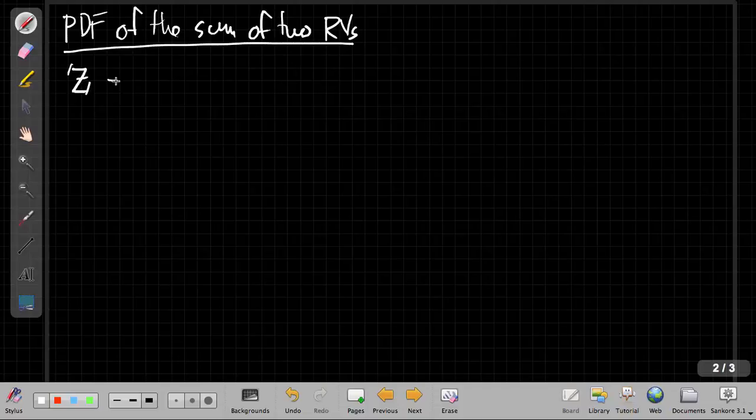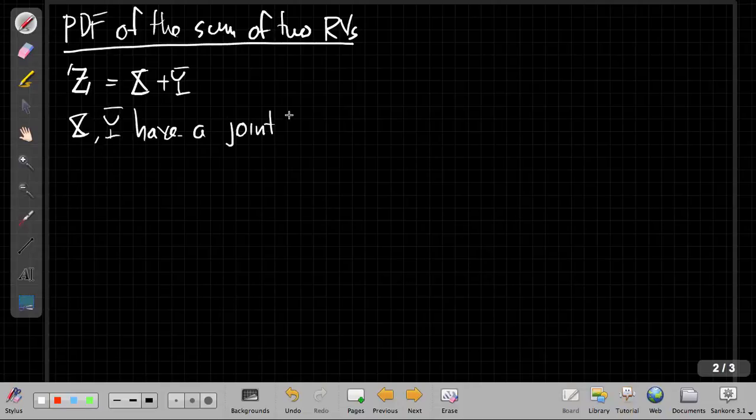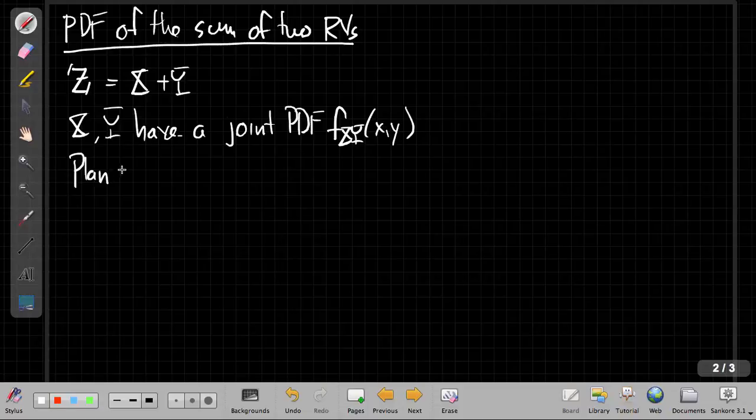We're going to assume Z is equal to X plus Y, where X and Y have a joint PDF f_XY(x,y). Our plan: find the CDF first. This is a good strategy in a lot of probability problems where you need to find a PDF.